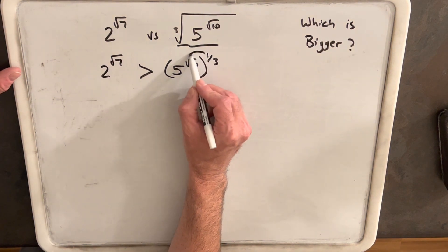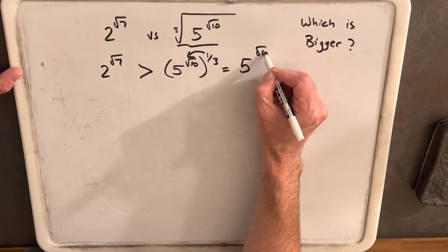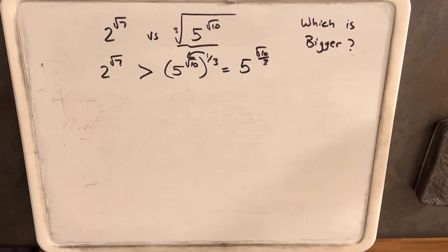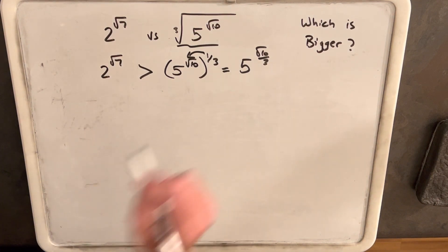But then I can multiply this inside here as 5 square root of 10 over 3. And now we have, I like this a little better, because then we just have one base and one exponent, even though we have radicals in both.